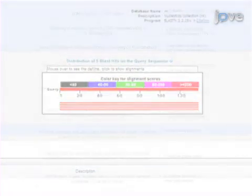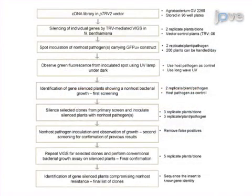Overall, this methodology of VIGS-mediated forward genetic screening allows researchers to easily identify genes involved in non-host resistance of plants against bacterial pathogens in a short time period.